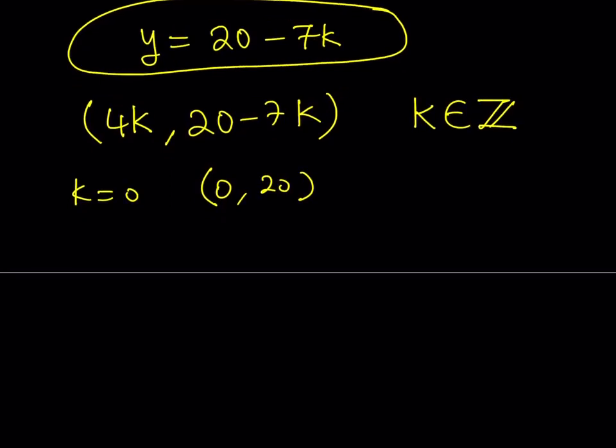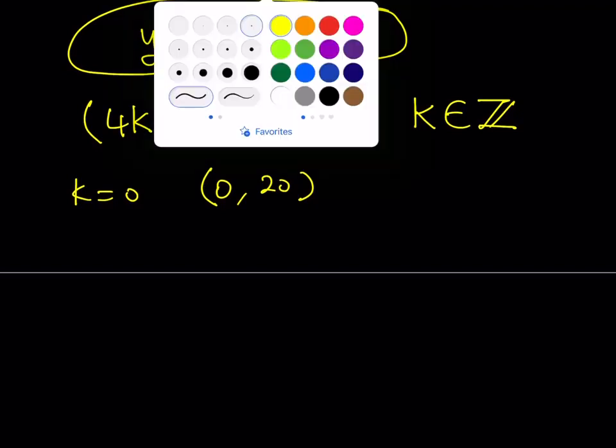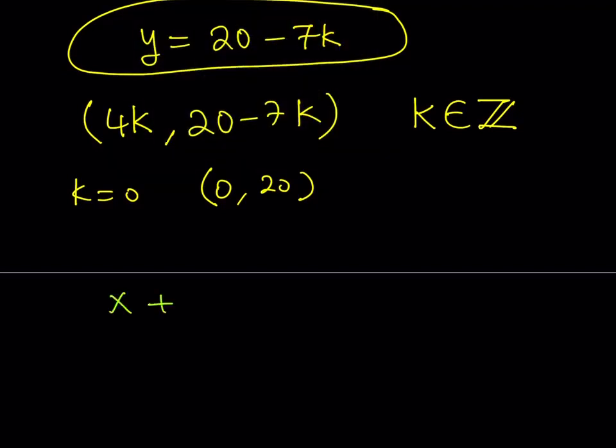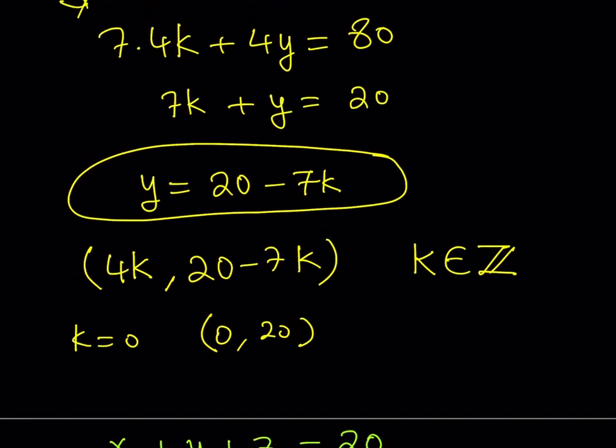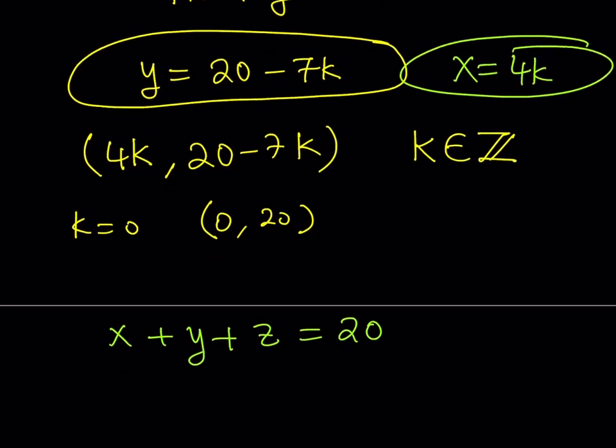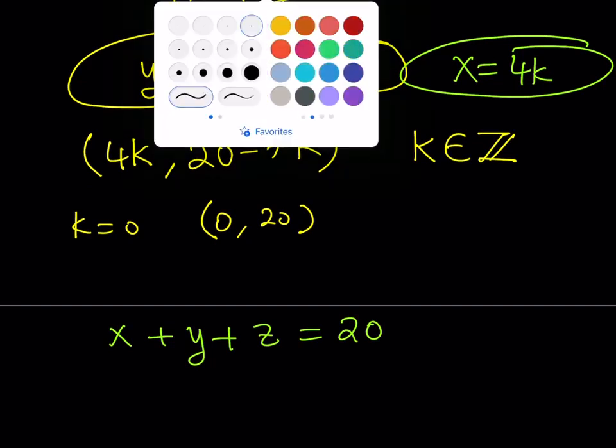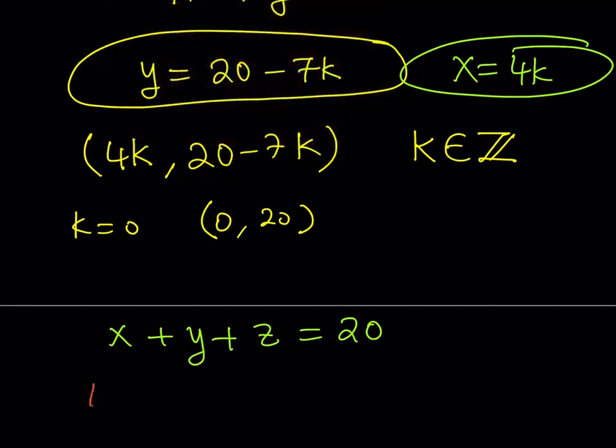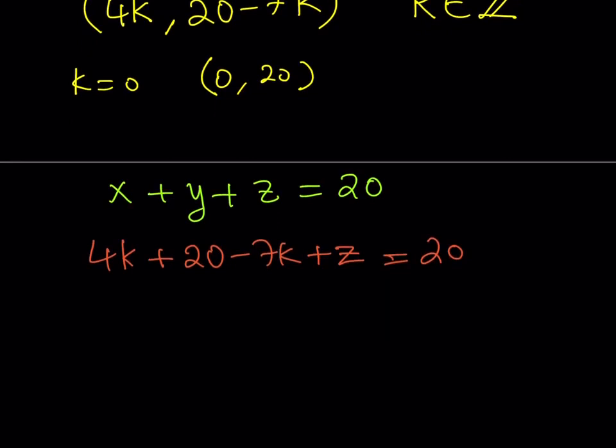Good question. Here's what we're going to do. I'm going to use the second equation because it's a little easier to handle: x + y + z = 20. And I know x and y in terms of k. x = 4k, and y = 20 - 7k. What I'm going to do is substitute these values into my equation. Replace x with 4k, y with 20 - 7k, and you're going to get the z values. z is going to be in terms of k as well.